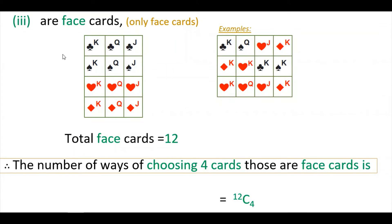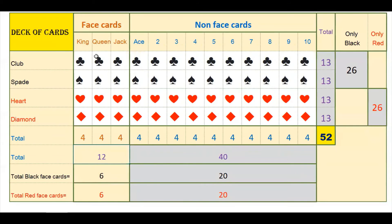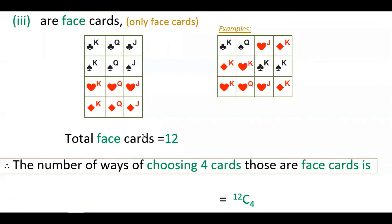The next question: choose 4 cards that are all face cards. Face cards are king, queen, and jack. Total face cards are 3 into 4 equals 12. Out of these 12 face cards, you have to choose any 4. So the number of ways is 12C4.